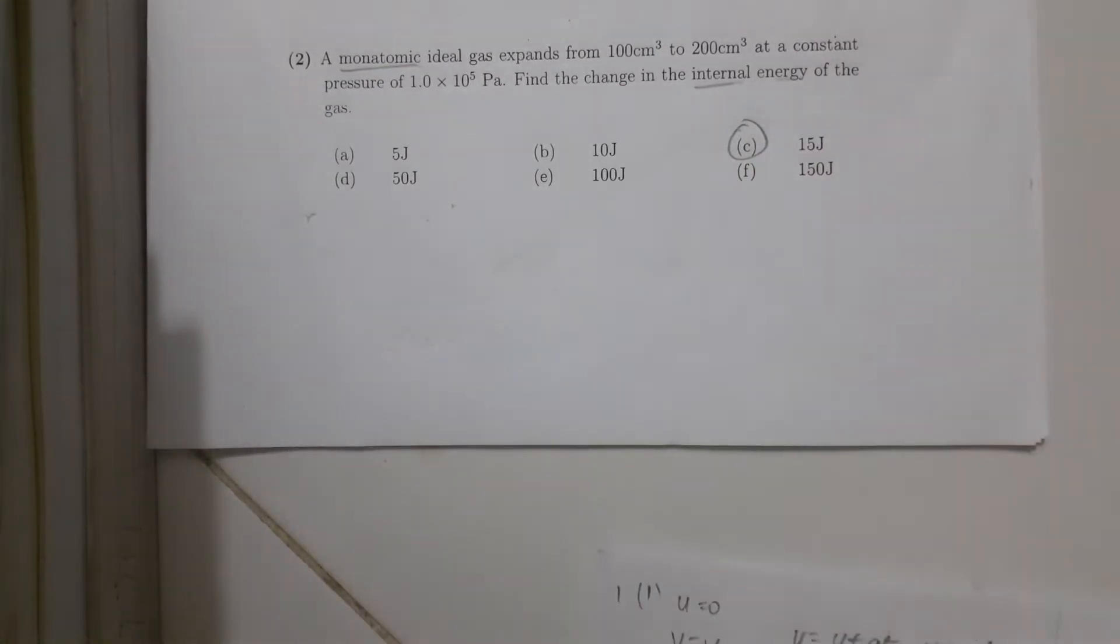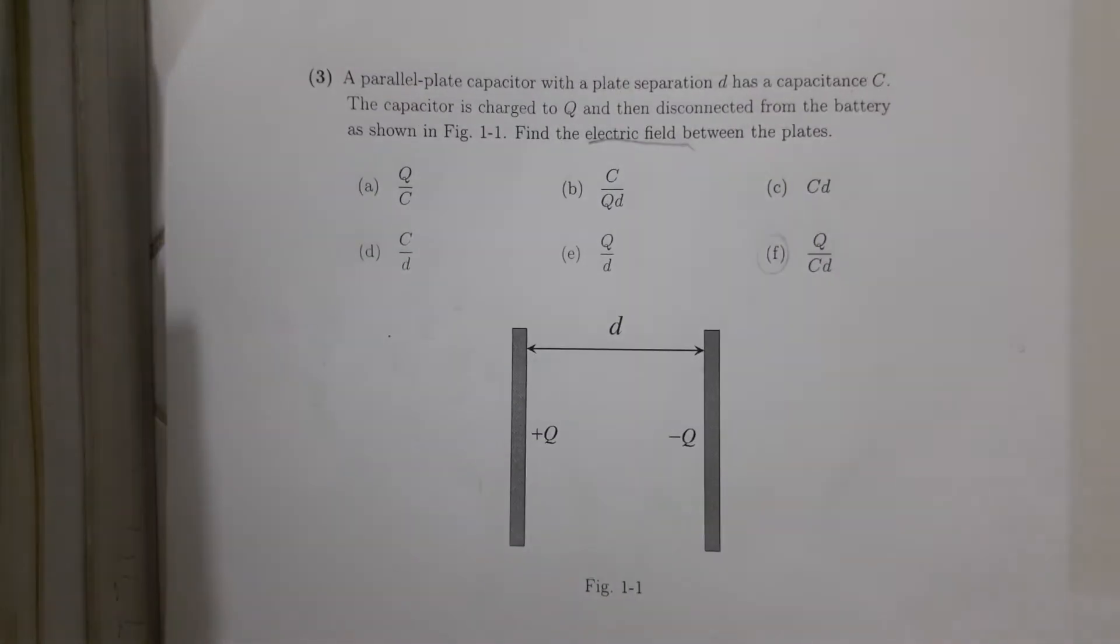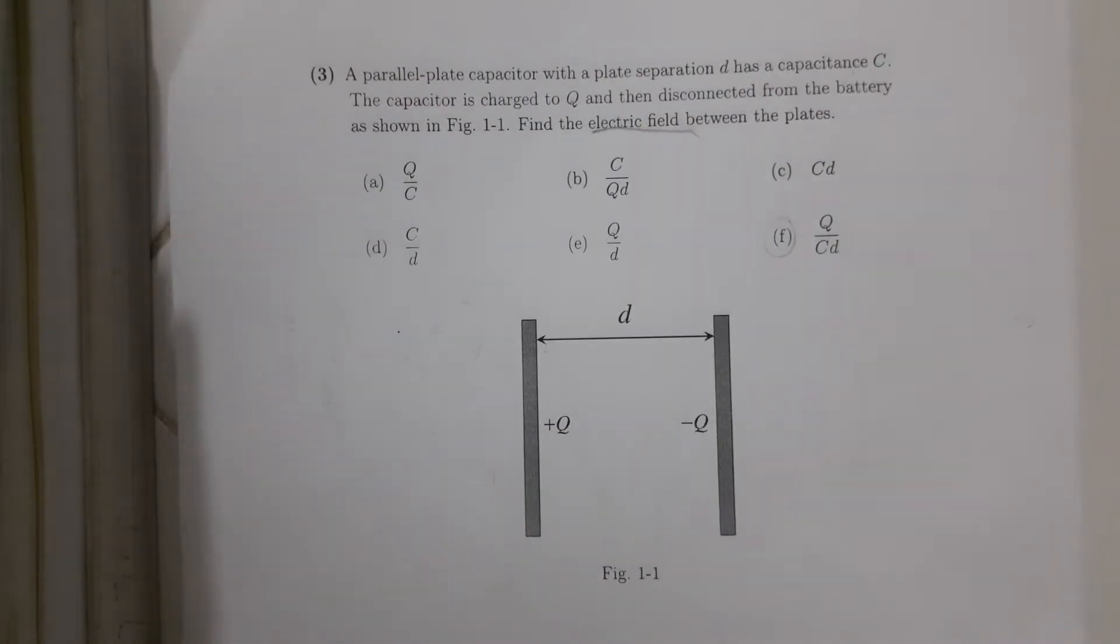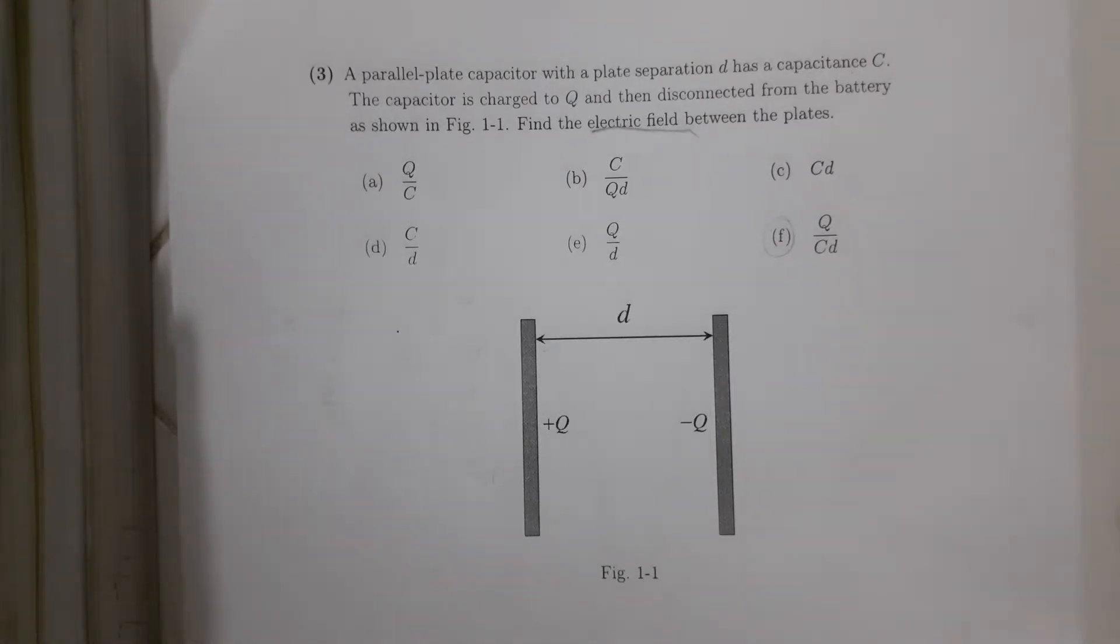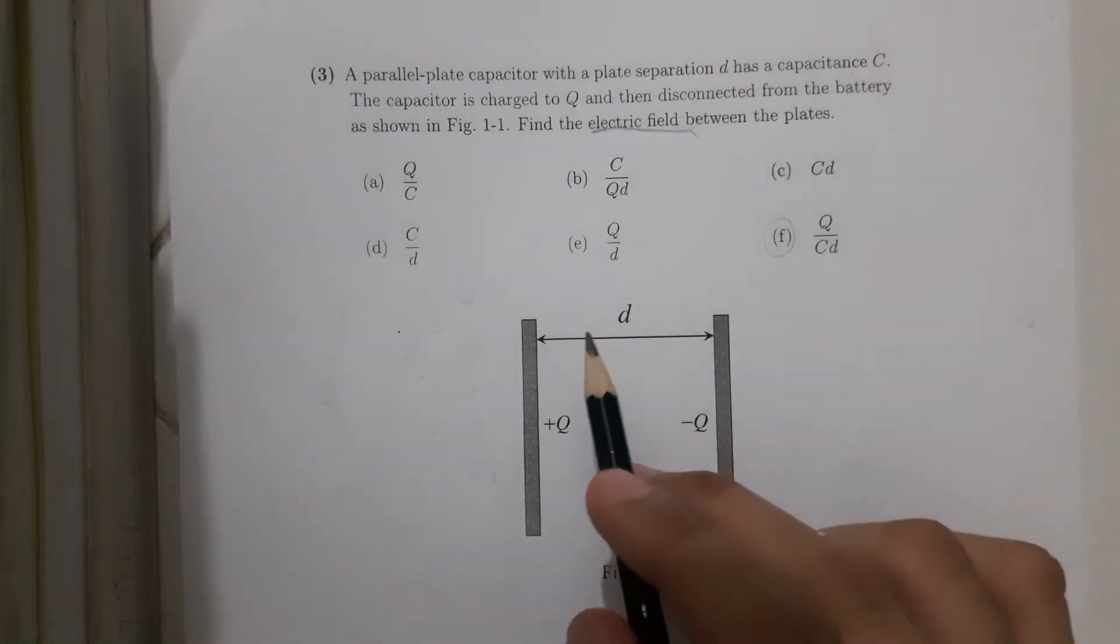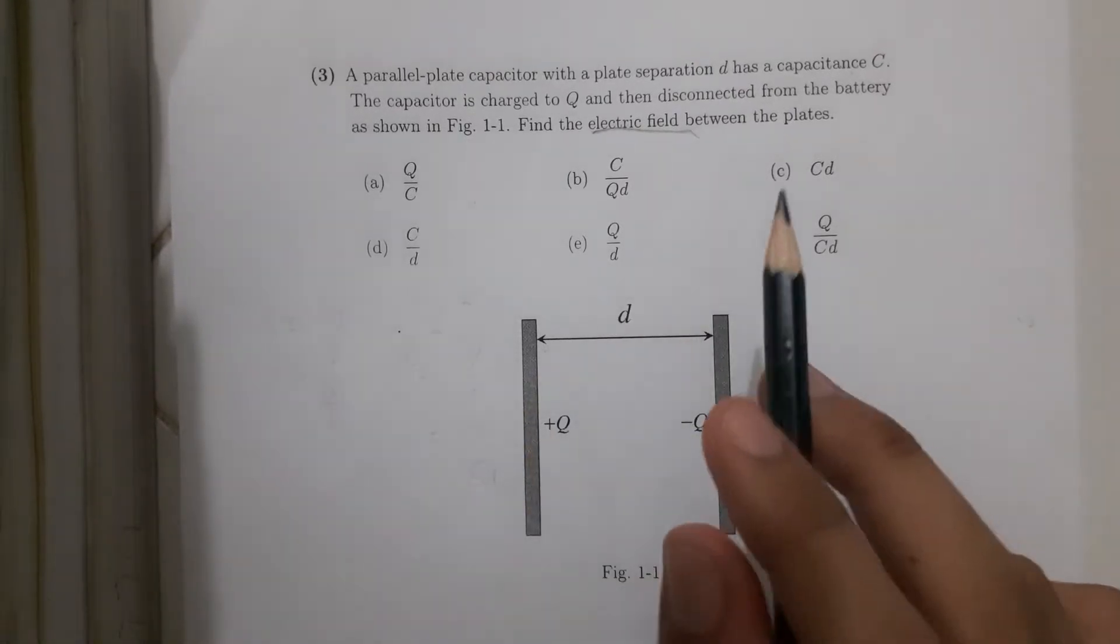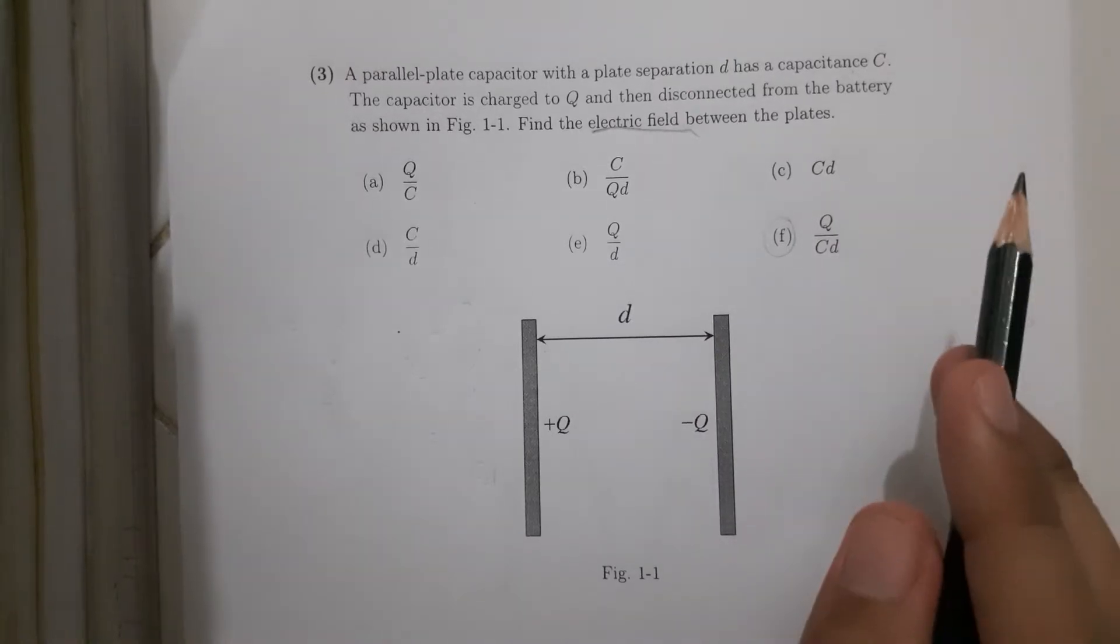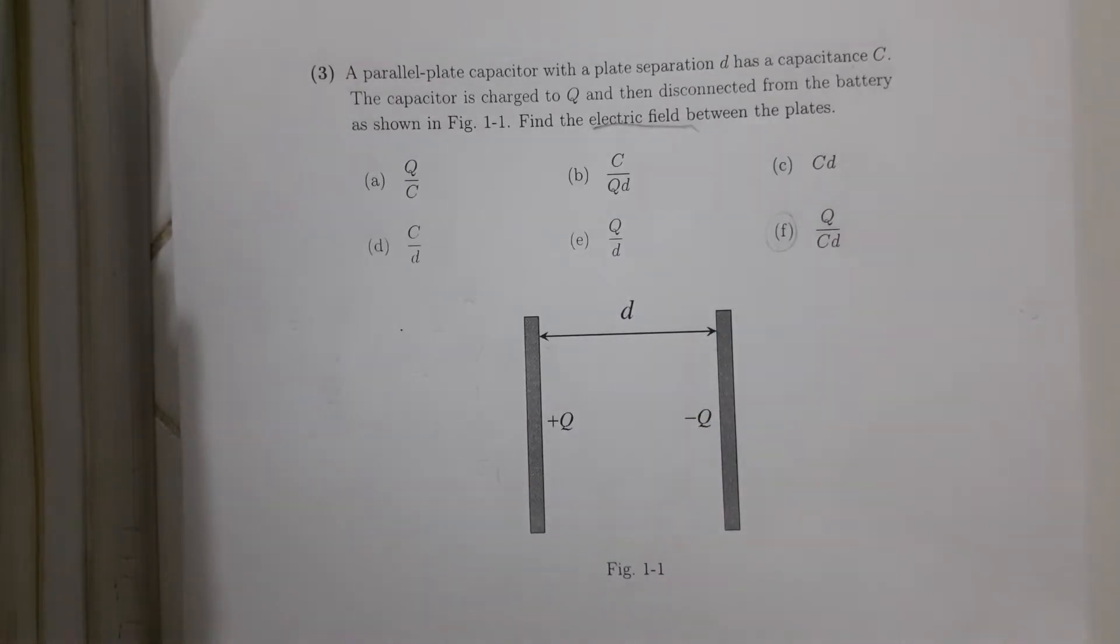Okay, off to number 3. For number 3, it says that a parallel capacitor with a plate separation D has a capacitance C. The capacitor is charged with Q and then disconnected from the battery and find the electric field.